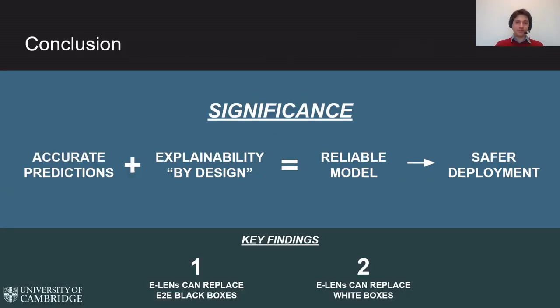This work is significant as it shows how explainable by design models can be as accurate as state-of-the-art black boxes while being as explainable as state-of-the-art white boxes. As a result, we can have much better interaction with the model by looking at the explanations or correcting logical formulas or intervening at the concept level. This is why we believe ELENs to be a step forward towards a safer deployment of deep learning in safety critical domains.